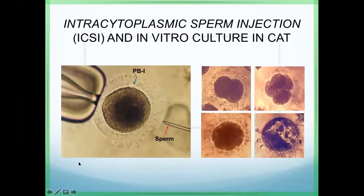The video shows cat oocytes inside — we use this approach. We inject directly into the oocyte, and when we culture it we will get the two-cell stage embryo.